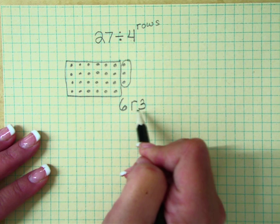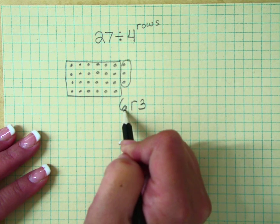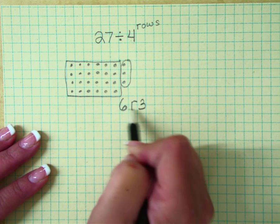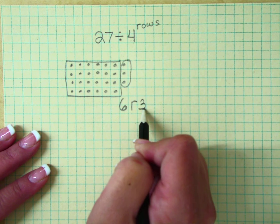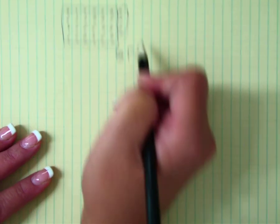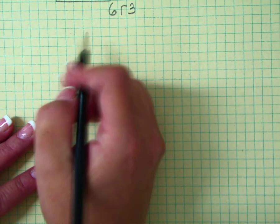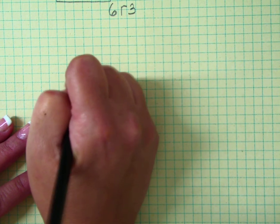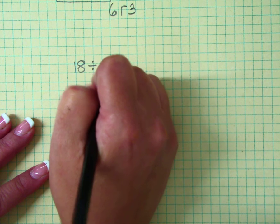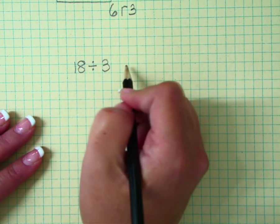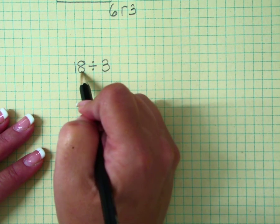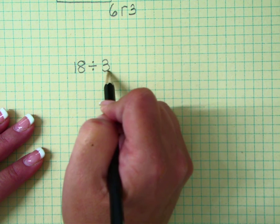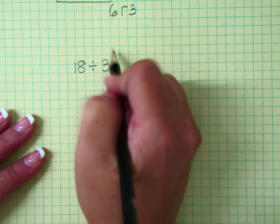So our quotient, our answer, is six with the remainder of three. Let's do another problem. Let's do 18 divided by 3. Again, this is our dividend and this is our divisor.